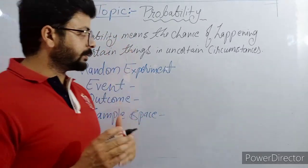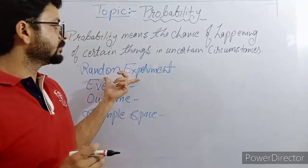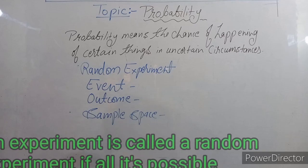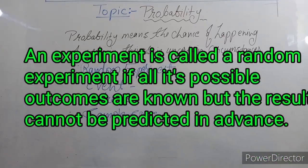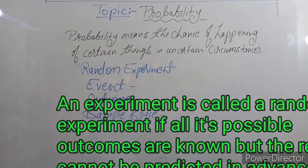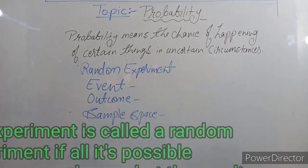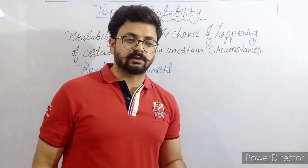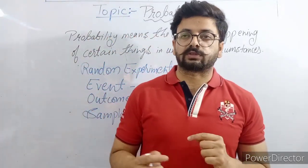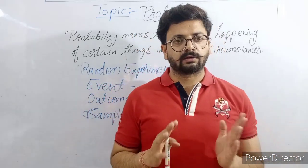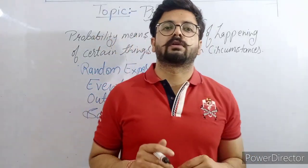Now, first I am telling you what is a random experiment. An experiment is called a random experiment if all its possible outcomes are known, but the result cannot be predicted in advance. The main point is that the result we cannot predict in advance.